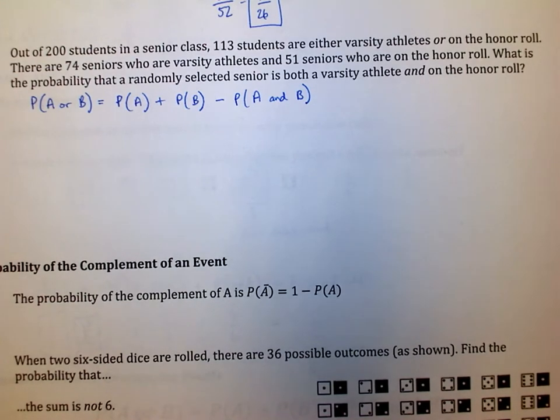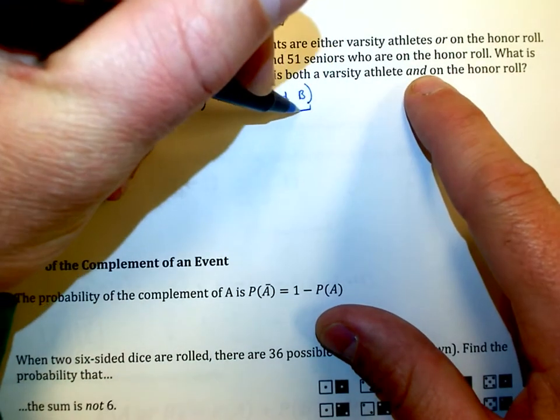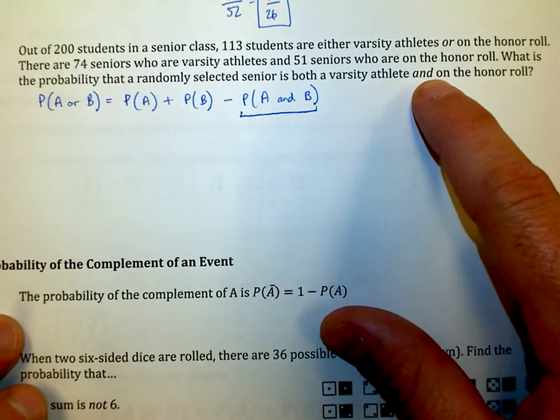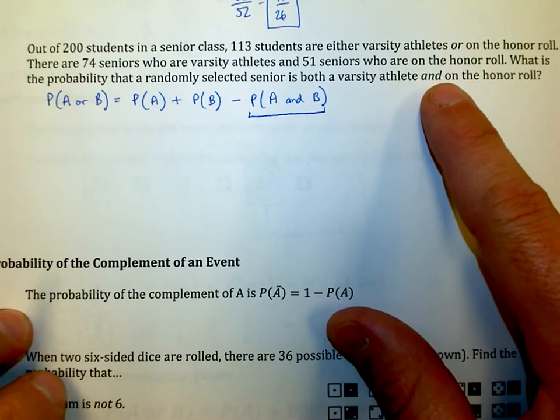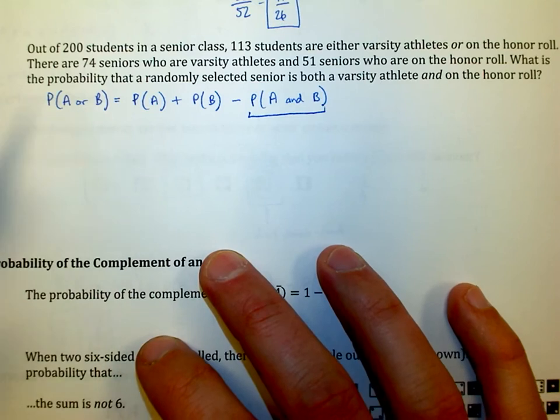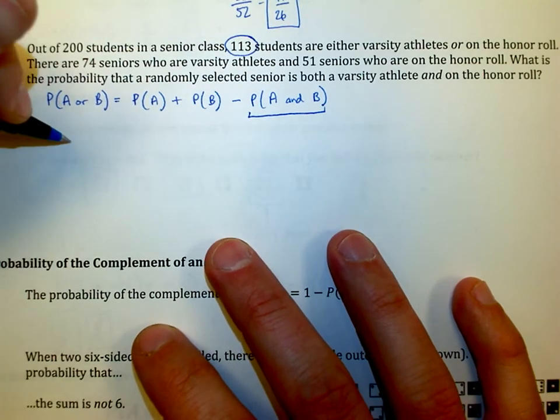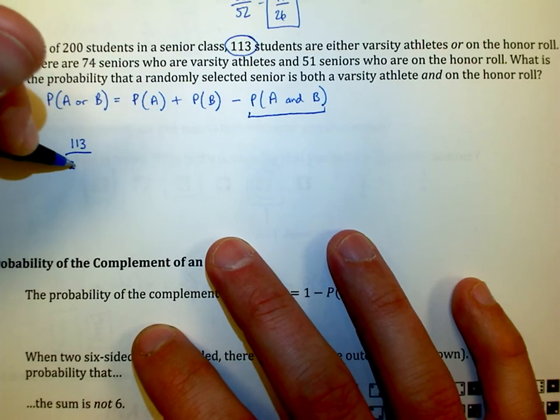Out of 200 students in the senior class, 113 students are either varsity athletes or on the honor roll. There are 74 seniors who are varsity athletes, there are 51 seniors who are on the honor roll. What is the probability that a randomly selected senior is both a varsity athlete and on the honor roll? In this case, I'm solving for this piece here. This is what I want to find. How many are either varsity athletes or on the honor roll? There are 113 students out of the 200 that are either one or the other.